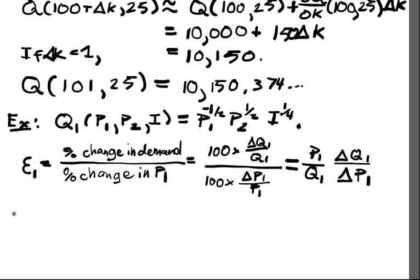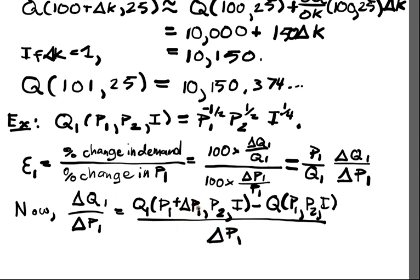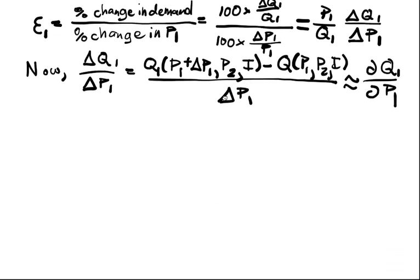And if we cancel things out and put everything in the right place, we end up with P1 over Q1 times delta Q1 over delta P1. Delta Q1 over delta P1, well that just looks like the definition of the derivative, only delta P1 is not actually zero but just some small number. So we're going to say this is just ∂Q1/∂P1, and we're going to use that as our measure of elasticity.